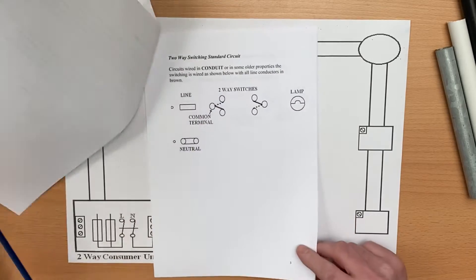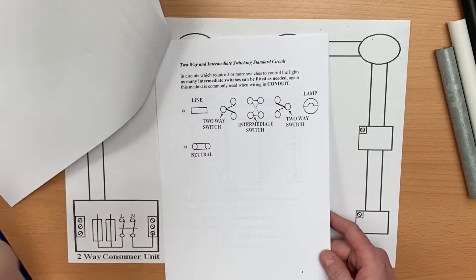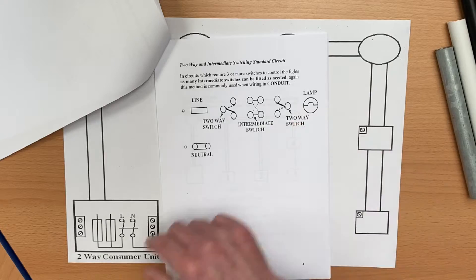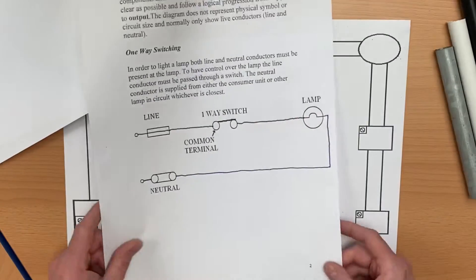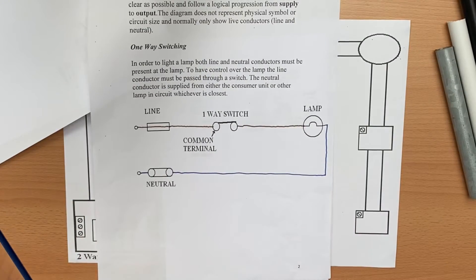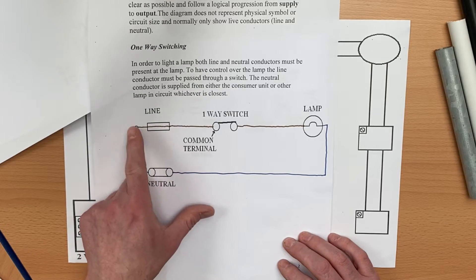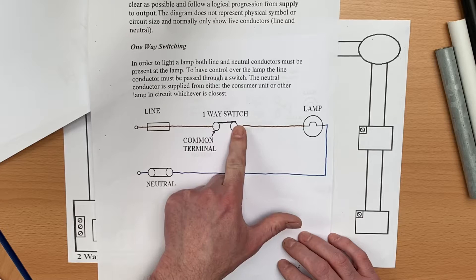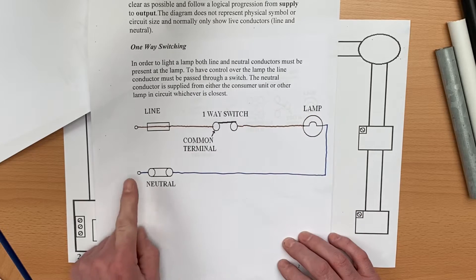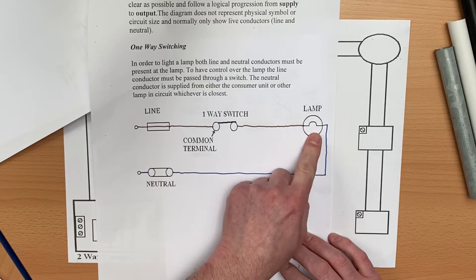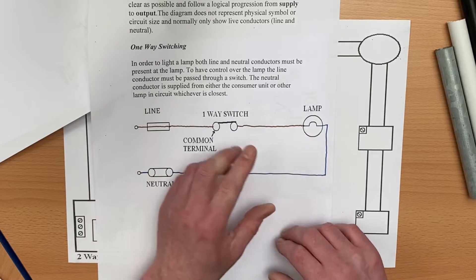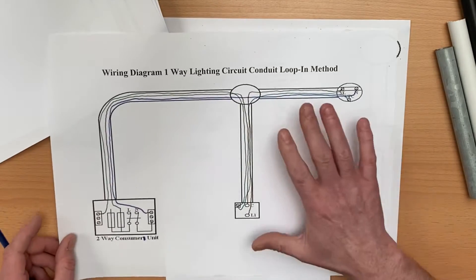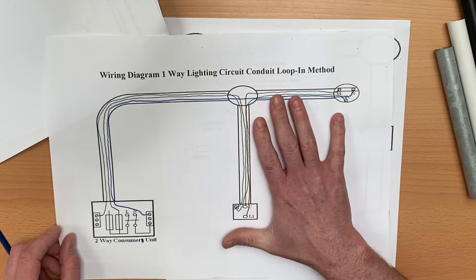We looked at circuit diagrams, and those circuit diagrams can be used to help us do a wiring diagram. We took this circuit diagram here of a one-way lighting circuit coming from a consumer unit through our fuse to a one-way switch, from our one-way switch to our lighting point, and then from our neutral in the consumer unit directly to our lighting point. This circuit diagram helped us produce a wiring diagram in part two of the introduction.